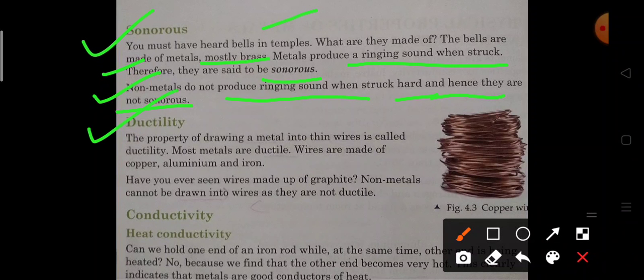Ductility: Ductility is a property by which the metals can be converted into thin wires. The property of drawing the metals into thin wires is called ductility. Most metals are ductile. Wires are made up of copper, aluminium and iron. Electric wires are used because of the property of ductility. Non-metals cannot be drawn into wires as they are not ductile.